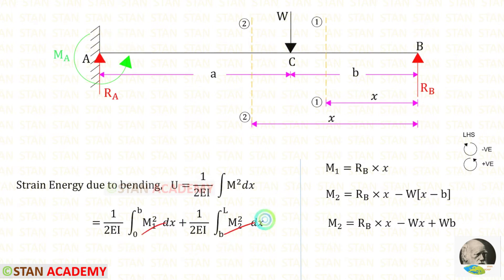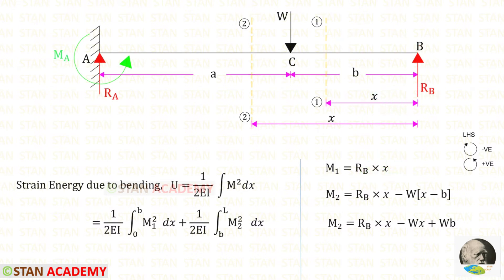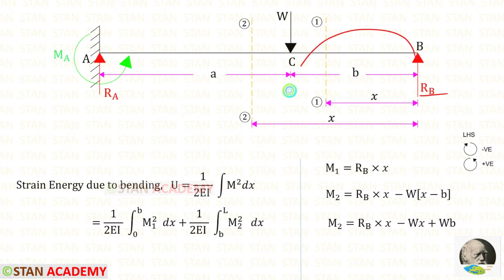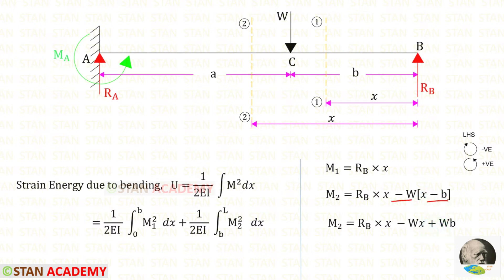Now let us find the moments from point B, moving towards the left-hand side. Clockwise will be negative and anticlockwise will be positive. For M1, up to the first section we have only the vertical reaction RB acting in the anticlockwise direction, so it is positive and the distance is X. For M2, up to the second section we have the load W and reaction RB. RB is anticlockwise so positive with distance X. W is clockwise so negative, and its distance is (X − B), giving terms −WX and +WB.